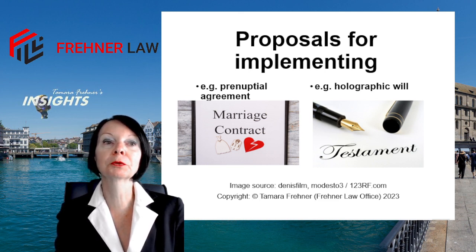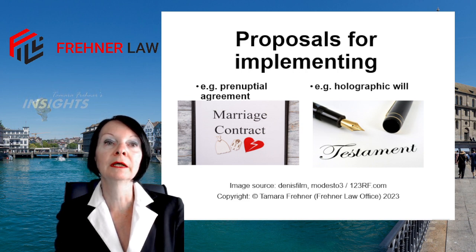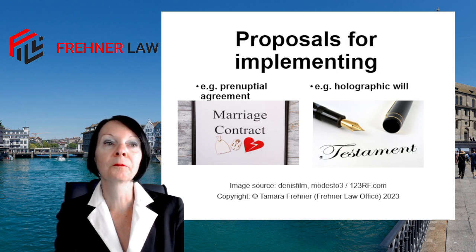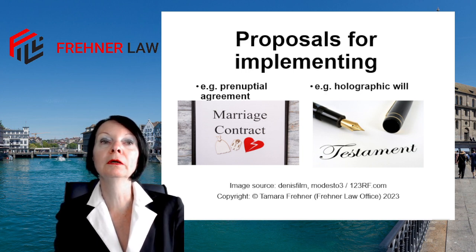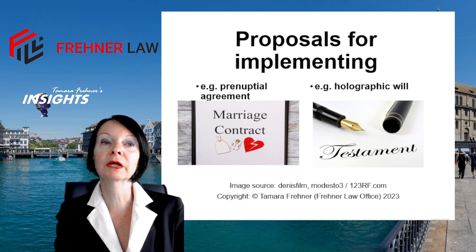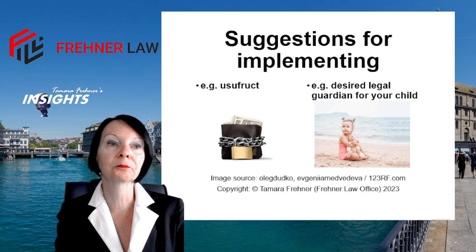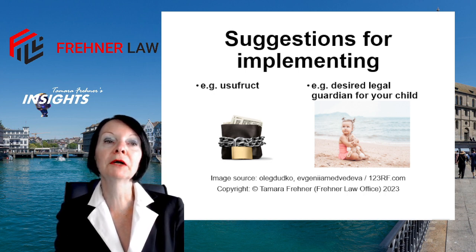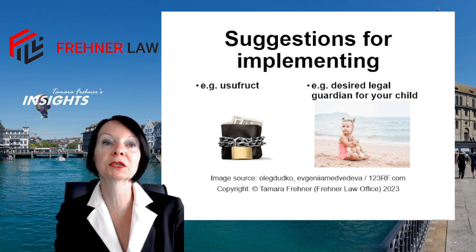An executor may be appointed to execute the last will and testament, which will relieve the burden on your heirs. A usufruct in favour of the spouse can, for example, prevent the sale of real estate — the surviving spouse may remain in the home or rent it out, while the children receive the bare ownership. In the case of minor children, parents often feel the need to express their wishes to a guardian.